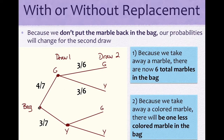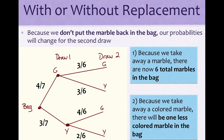So if we drew a green first, there are three greens left out of six total. For yellow on that branch, we didn't pick yellow first, so there are still three yellows but out of six total. Down here, if we drew yellow first: there are still four greens out of six, and we took a yellow so instead of three yellows we have two, out of six total.